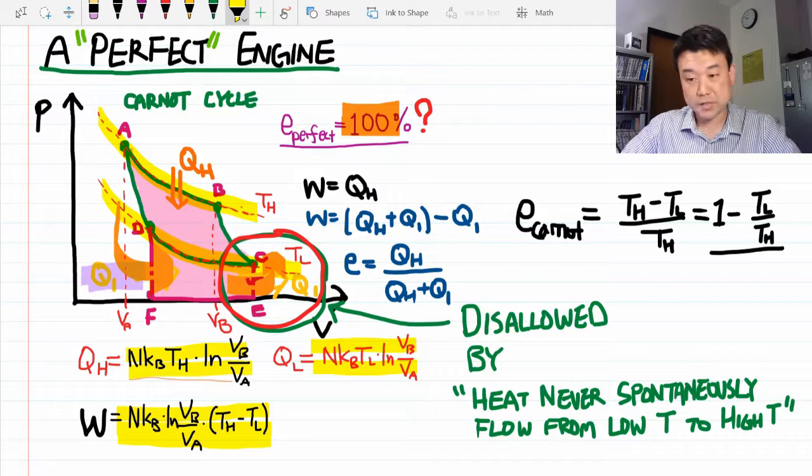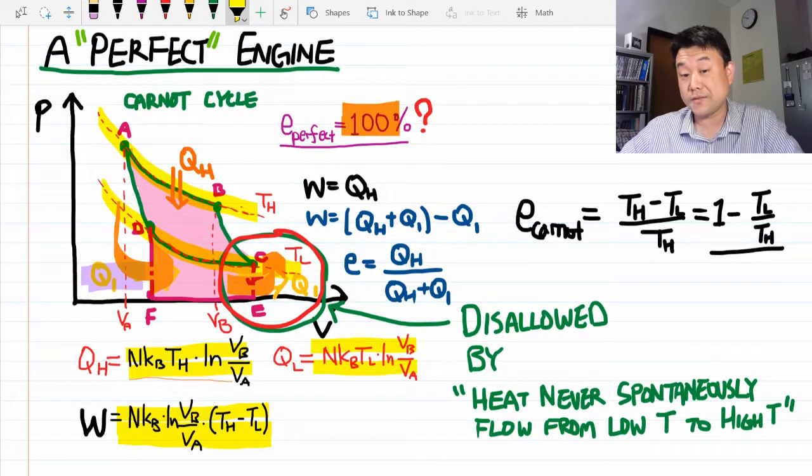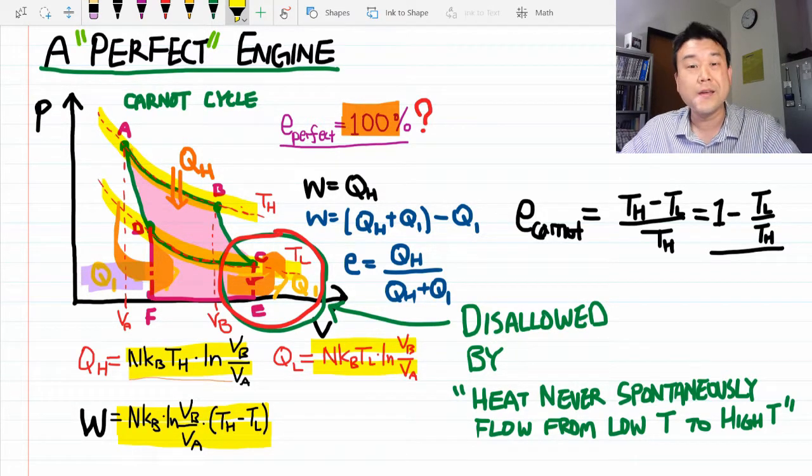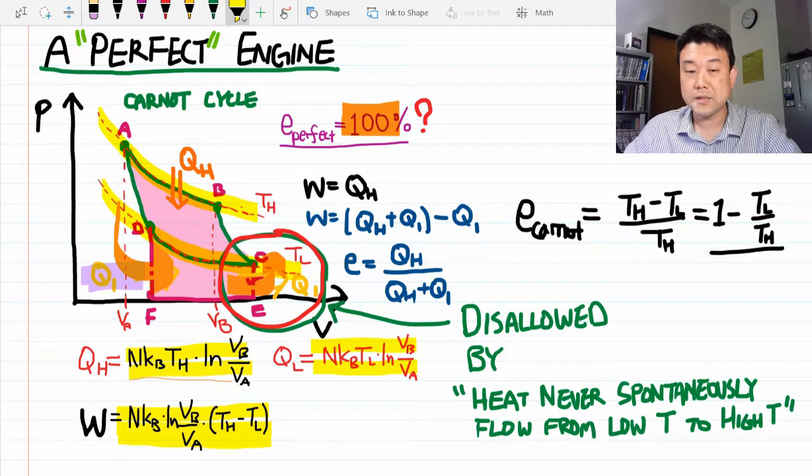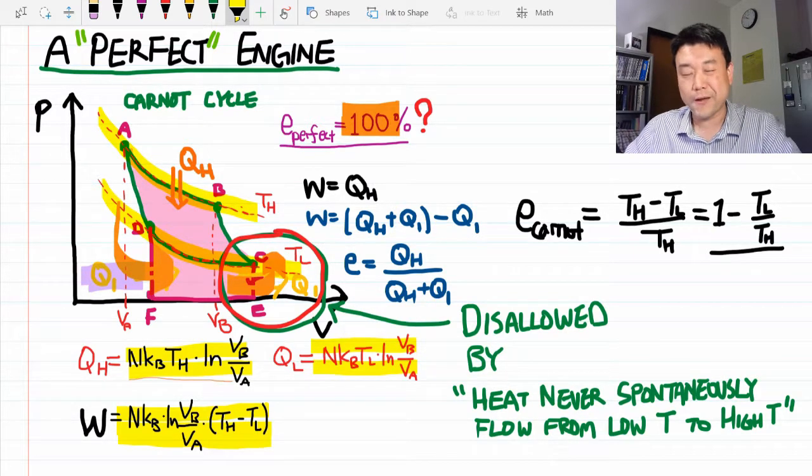So we are going to have to resign ourselves to that. The Carnot efficiency, which is never at 100% unless you have access to zero Kelvin low temperature reservoir, is the most perfect engine possible.